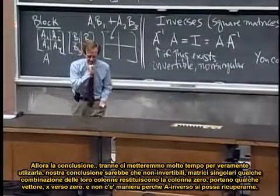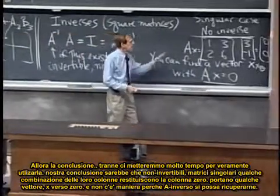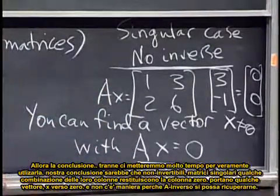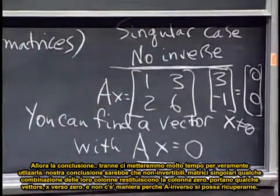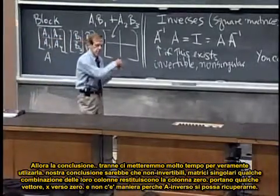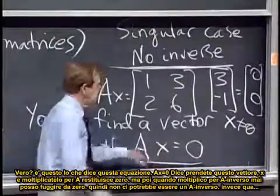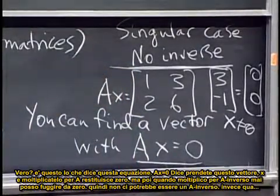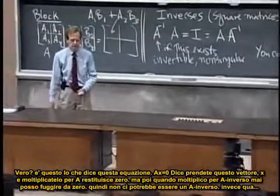So conclusions. It'll take us some time to really work with that conclusion. Our conclusion will be that non-invertible matrices, singular matrices, some combination of their columns gives a zero column. They take some vector x into zero. And there's no way A inverse can recover.